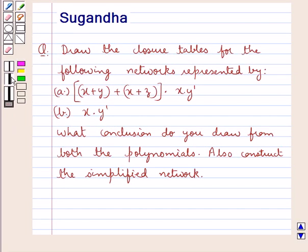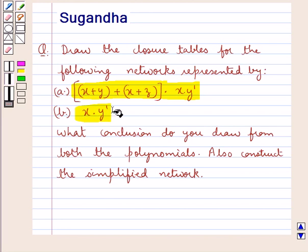Hello and welcome to the session. In this session we discuss the following question which says: Draw the closure tables for the following networks represented by (x+y) + (x+z) into x into y complement, and x into y complement. What conclusion do you draw from both the polynomials? Also construct the simplified network. Let us start with the solution.